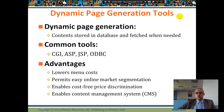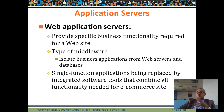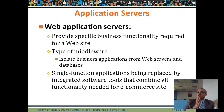Web application servers provide specific business functionality required for a website. Types of middleware isolate business applications from web servers. For example, if you're a bank, you don't want all your information exposed on the internet. A middleware layer checks that only people with a valid username, password, or special authentication can access the bank database. Single-function applications have been replaced by integrated software tools covering all functionality needed for e-commerce sites.